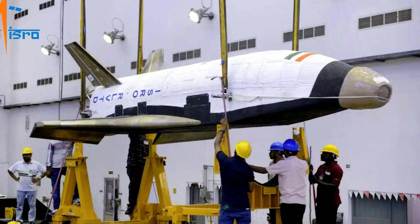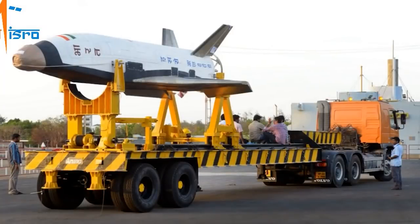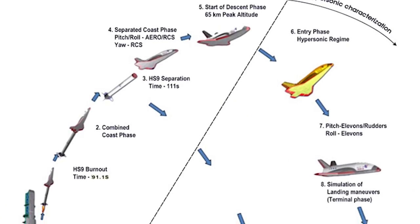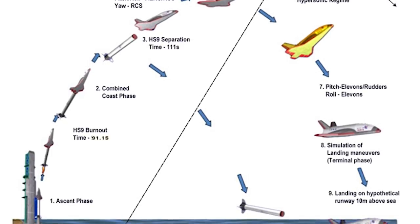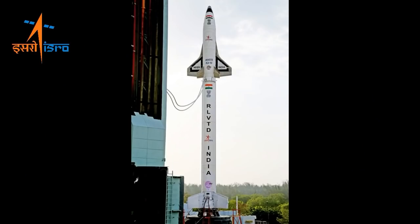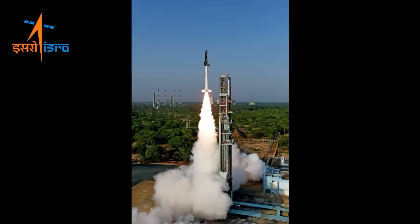The rocket has a nose cap, fuselage, double delta wings, twin vertical tails and symmetric active control surfaces called elevons and rudder. Using these kinds of technologies would reduce the launch cost by a factor of 10.